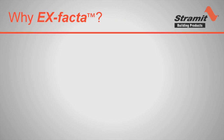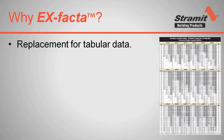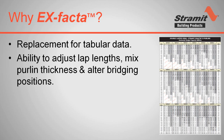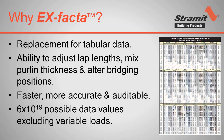So why would you use Stramit X Factor software rather than using lookup tables from a technical manual? Well, without X Factor, purlins can be selected from a large list of simple lookup tables, but these are sometimes over-conservative simplifications of loads and spans. The Stramit technical manual has 27 lookup tables with an estimated 25,000 data values. Using tables alone, there is no practical provision to alter bridging positions, adjust lap lengths or mix purlin thicknesses. X Factor is much faster, accurate and easier than looking up tables and manual calculations. It is simply impossible to publish lookup tables covering every possible solution.